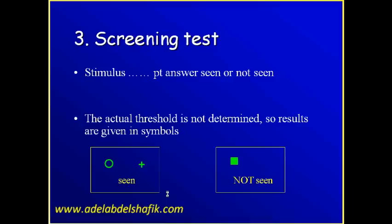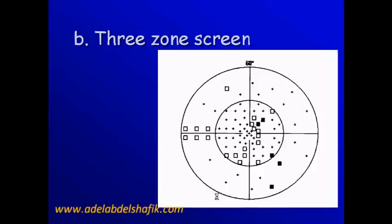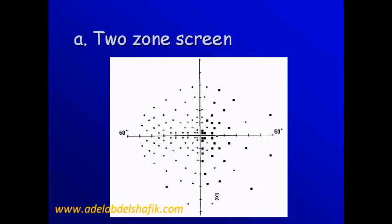Screening - here we get one stimulus very strong but the same intensity, presented all over the field. If the patient sees it, then you get this mark, say a plus or a circle. If the patient doesn't see it, then you get this square. The printout - all the dark squares mean blindness and the open squares or the open rings mean seeing an area. Sometimes you can ask the program to retest the blind areas again with another sensitivity. So in this printout, the plus signs mean it's a visible area. The dark squares are more depressed than the white squares. So we get three zone screening and we get two zone screening.